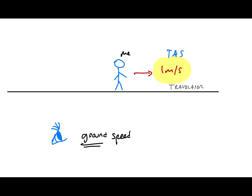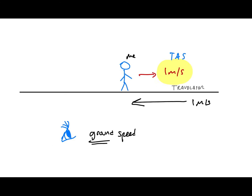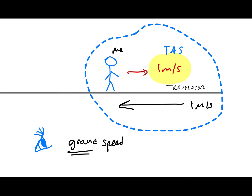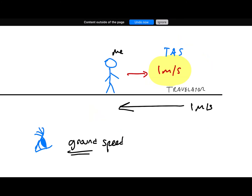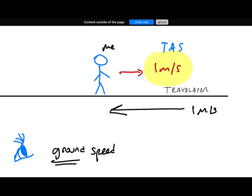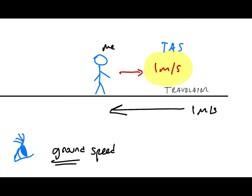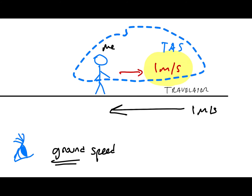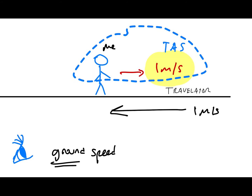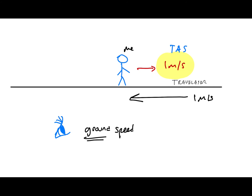Now if the travelator itself is moving in the opposite direction at one meter per second — the whole travelator including me is moving at one meter per second the other way — what is my true airspeed? The reference point is the travelator, so I'm still moving at one meter per second true airspeed. But the travelator itself is moving relative to the ground. So relative to the outside observer, it cancels out, and the ground speed is zero. If you're not on the travelator you're not moving at all, but on the travelator you're still walking while it moves in the opposite direction.